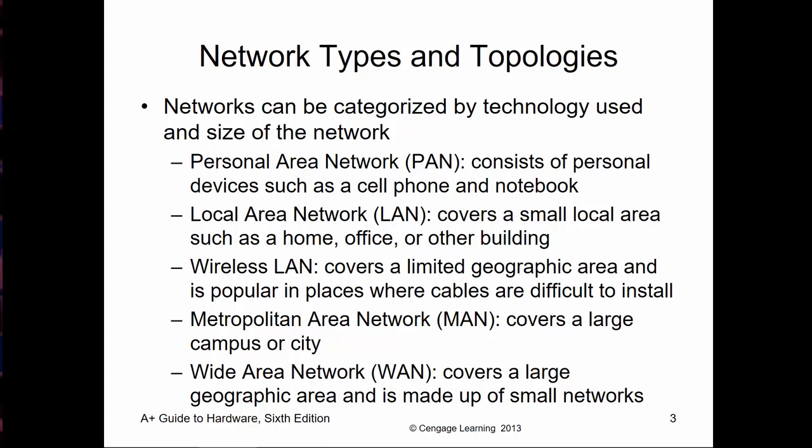We can have a wireless LAN, or WLAN — that's going to be a LAN that's wireless. We could have a metropolitan area network, or a MAN, which is going to be larger than a LAN, more like a city-wide LAN. And then lastly, we have a wide area network — that's going to be a very large area, normally multiple LANs, and its geographical area is going to be very large. This is just a very small list of possible types of topologies.